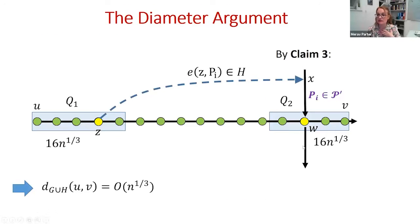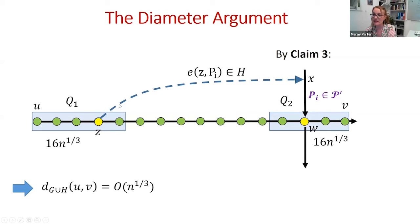Combining both claims: the suffix of Q has very few uncovered vertices (at most n^(1/3)) and each covered path contributes at most three vertices to Q, so the suffix must intersect many distinct paths in the collection. By Chernoff, since each path is sampled with probability ~1/n^(1/3), with high probability the suffix intersects at least one sampled path. This provides the saving edge connecting a sampled vertex to a sampled path, completing the diameter argument.